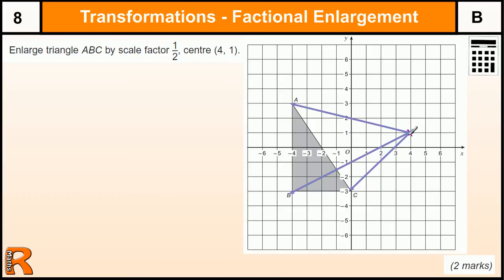That's going up 2 and across 8, so we need to go up 1 and across 4, which would be here. From there we can draw the scale factor half enlargement.